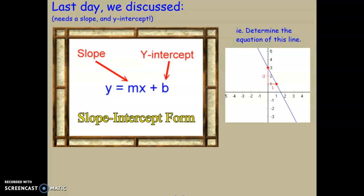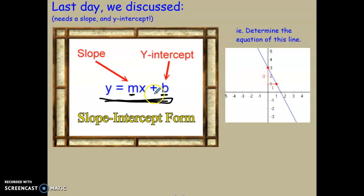Hello grade 10. We have just finished discussing slope-intercept form. Remember that slope-intercept form is where you have y equals mx plus b, where m is your slope and b is your y-intercept.